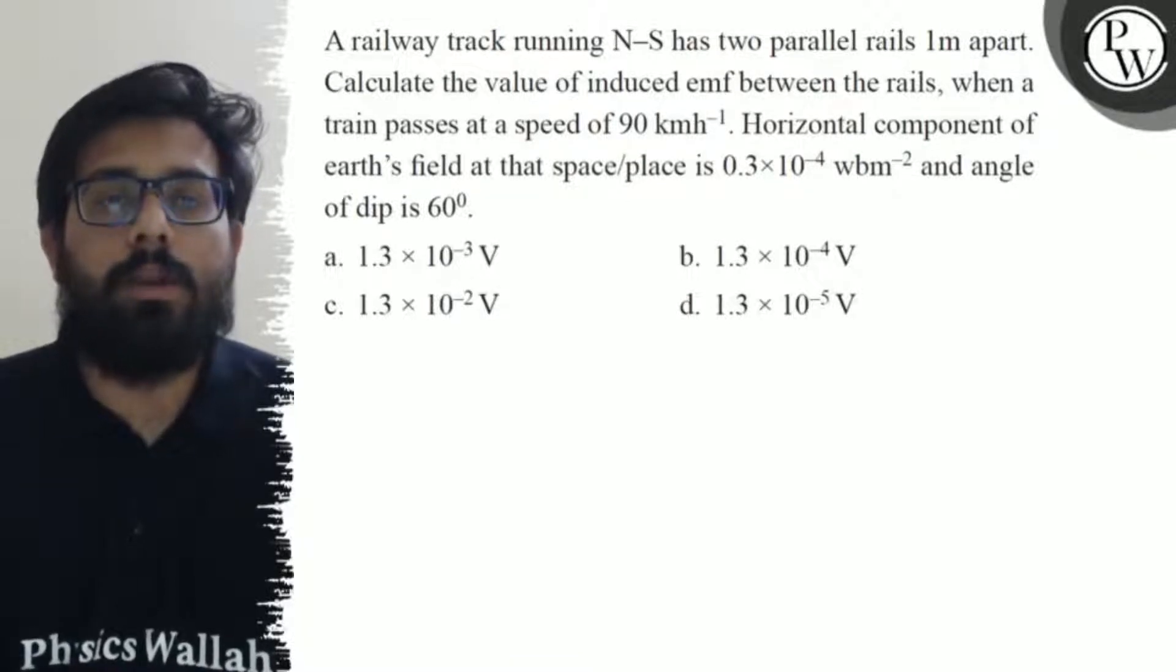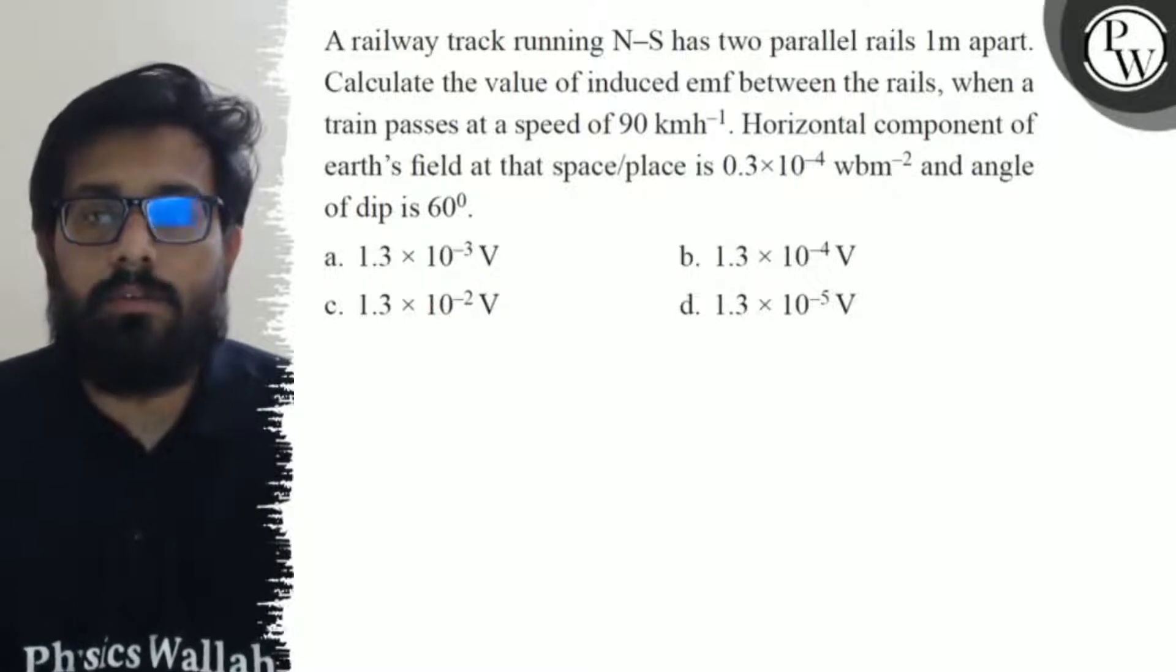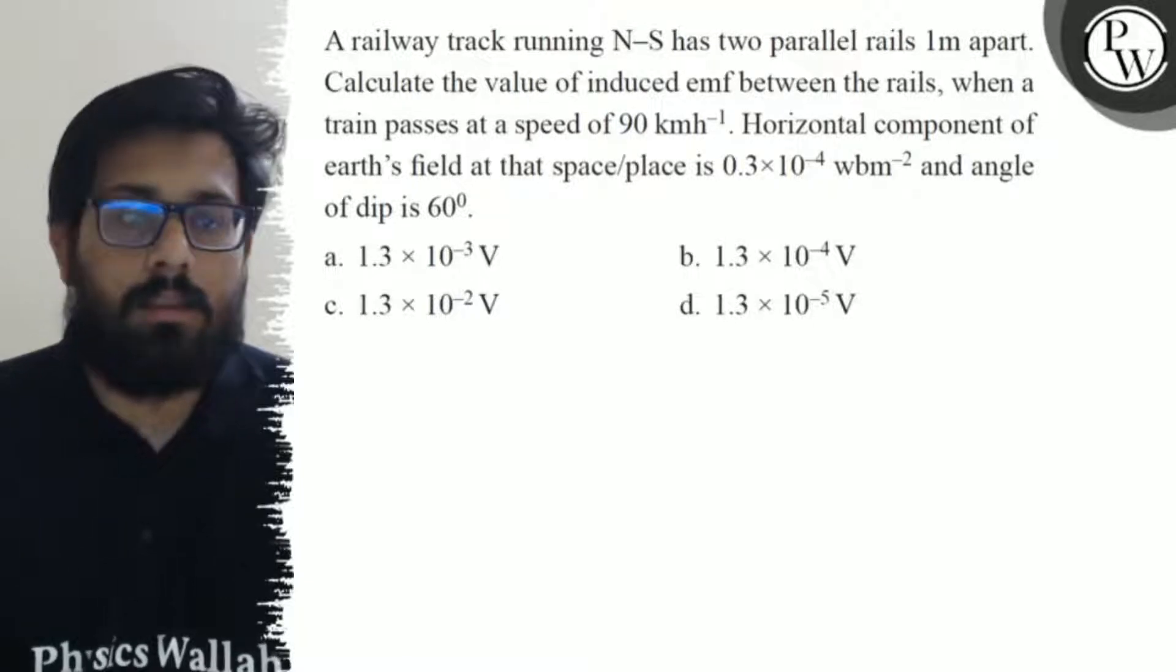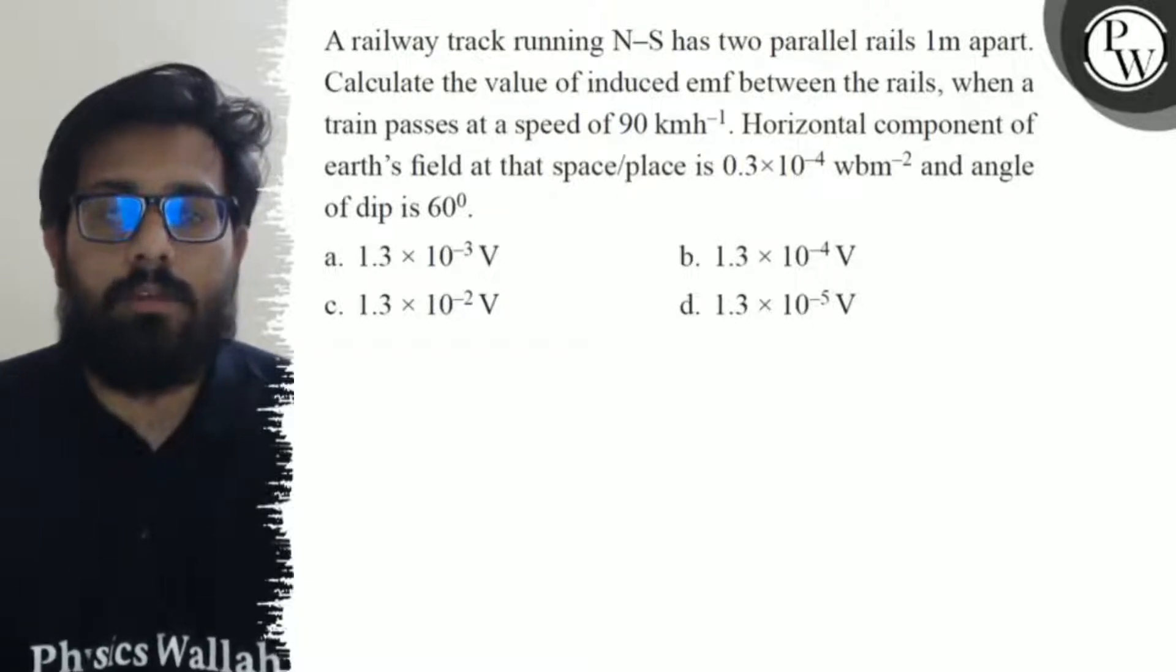Horizontal component of the Earth's field at that place is 0.3×10⁻⁴ weber per meter squared and the angle of dip is 60 degrees. Your first option is 1.3×10⁻³ volt, second option is 1.3×10⁻⁴ volt.